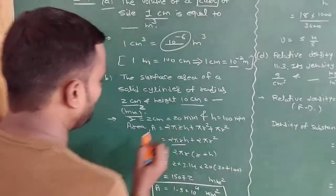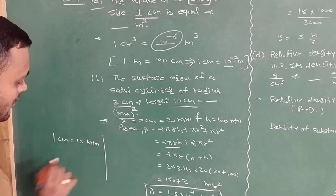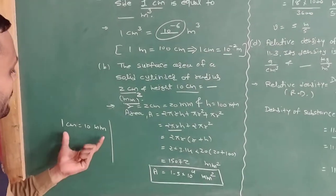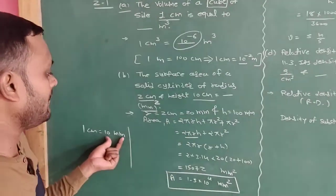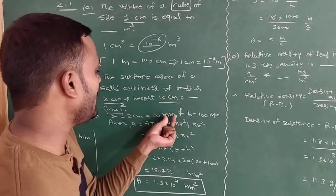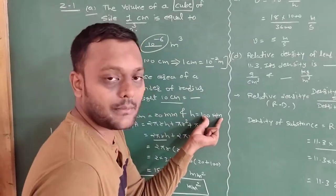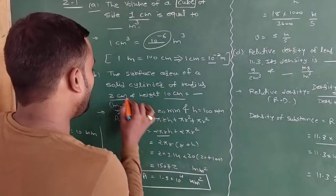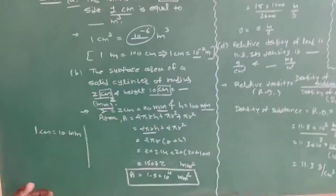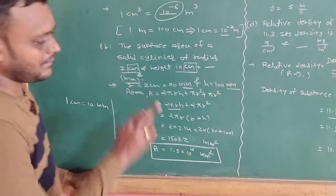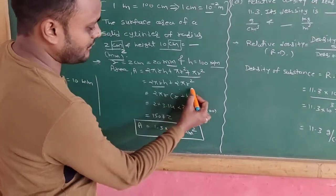We have to convert cm into mm. You know this relation: 1 cm equal to 10 mm. From the data, by putting the value, r = 2 cm becomes 2 into 10 = 20 mm. Similarly, height is given 10 cm, so height in mm = 10 into 10 = 100 mm. So we converted the values from cm to mm. Now we utilize the data in mm. Area = 2 pi r h plus pi r square plus pi r square, which simplifies to 2 pi r squared plus 2 pi r h.